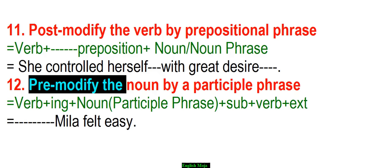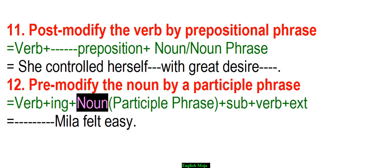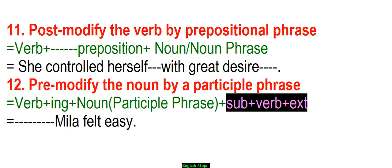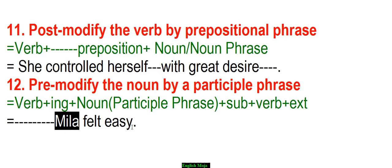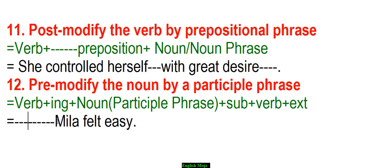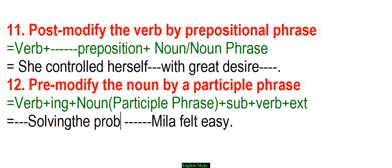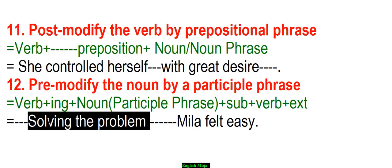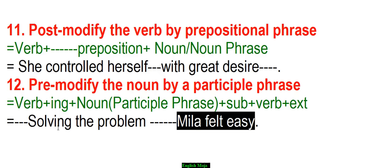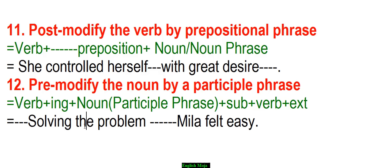Number twelve: pre-modified noun by a participle phrase. Participle phrase has an -ing form followed by a noun. For example, 'solving the problem' — solving the problem gave her a sense of relief. So 'solving the problem' is the participle phrase acting as a pre-modifier. These are the twelve shortcut techniques for modifiers.